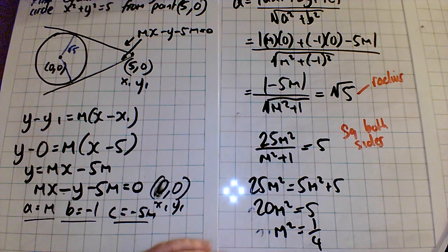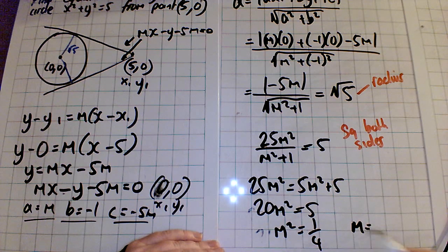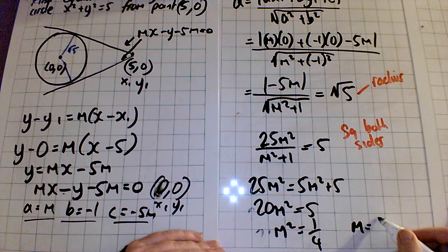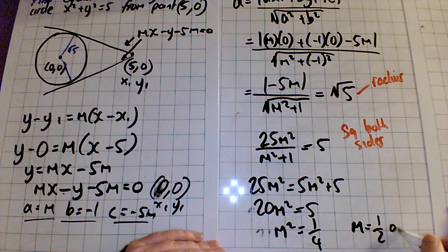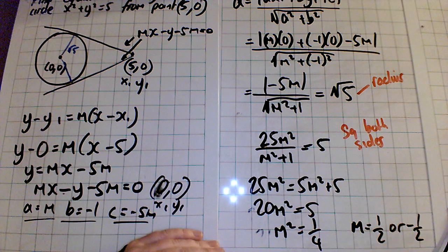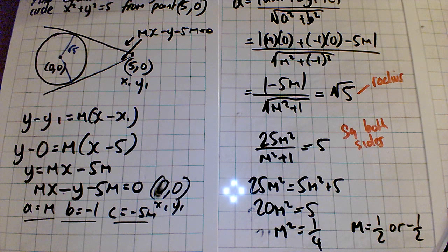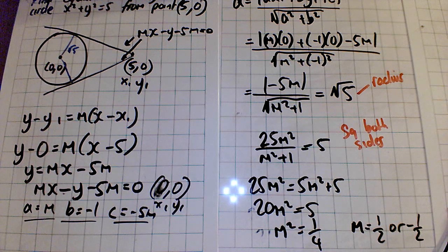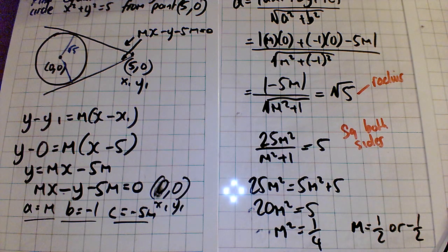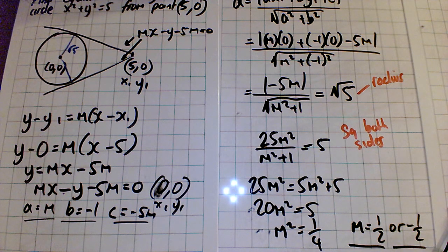And if m squared is a quarter, m, the square root of a quarter, is actually a half, or minus a half. Because a half squared is a quarter, and minus a half squared is a quarter also. We're not dealing in terms of distance or length yet, we're just dealing in terms of slope. So there's our two slopes.